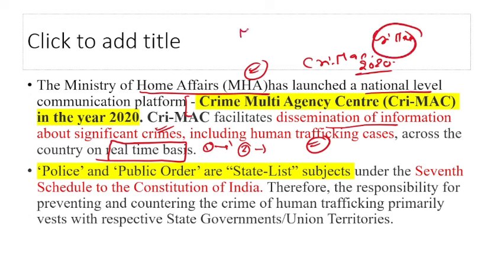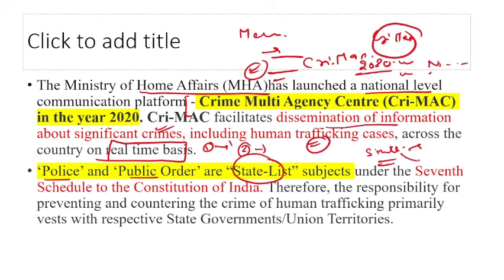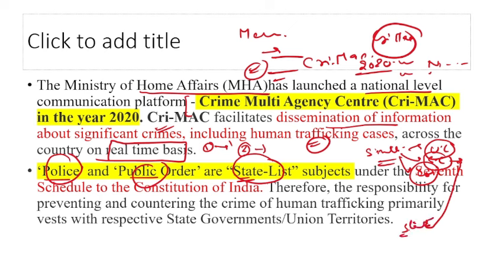Crime MAC gives real-time information. Since police and public order fall under the State List, the respective state governments and UTs have the power and responsibility to prevent human trafficking through their own laws. Union List subjects are legislated by Parliament; State List subjects by states; Concurrent List by both, but in case of conflict, Parliament's law prevails.